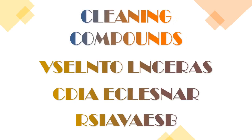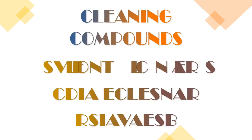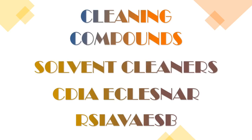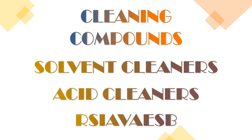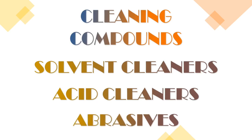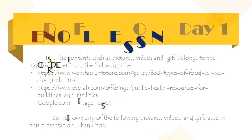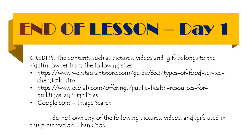Solve the jumbled letters and words. The first one is solvent cleaners — amazing. The second one is acid cleaners — you are doing well. And the last one is abrasives — you did great. So this sums up our lesson for today. You need to do your activity and answer your quizzes, so don't forget. I hope you learned something. Thank you and have a great day.